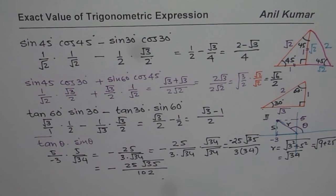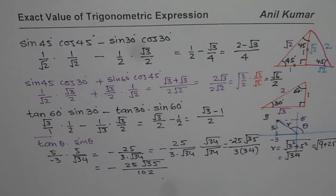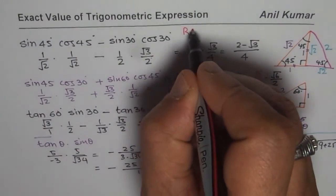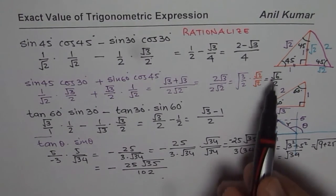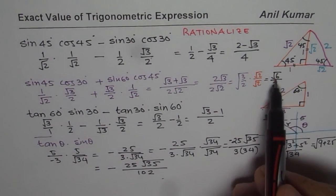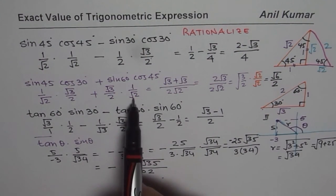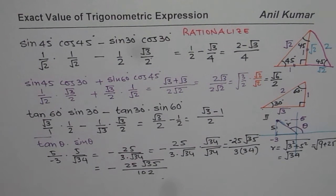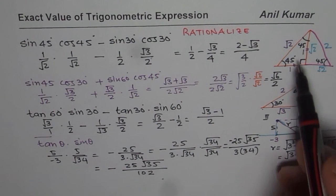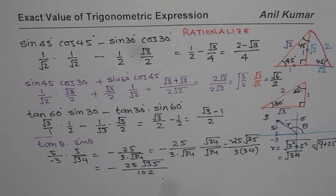I hope these examples give you a clear idea of how to calculate exact values of trigonometric expressions. Remember the key points: always rationalize if you get a radical sign in the denominator. You can avoid rationalization for 45-degree angles by using the triangle with sides square root 2, square root 2, and 2. Use special triangles to find exact values. Good luck solving questions from your textbook!